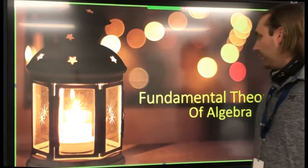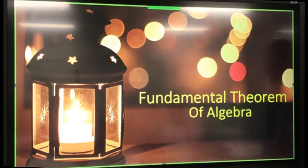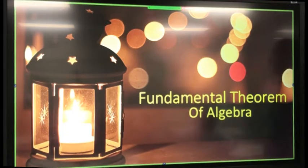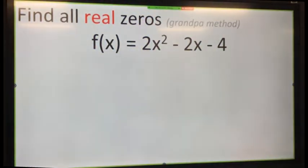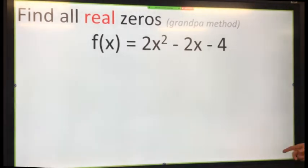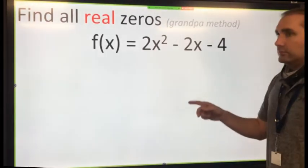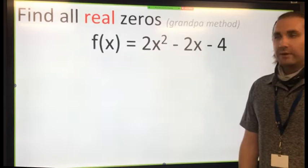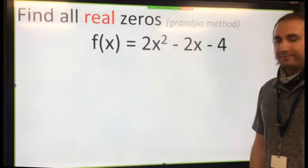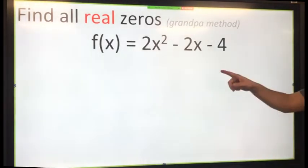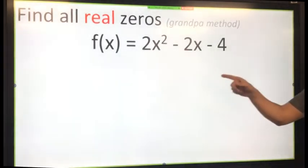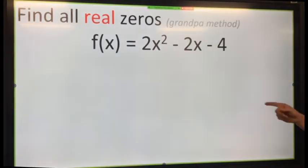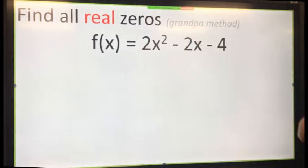Let's continue looking at the fundamental theorem of algebra, which is finding zeros of the polynomial. Let's look at the same example we did yesterday: 2x² - 2x - 4, and we're going to use the grandpa method to find our zeros.